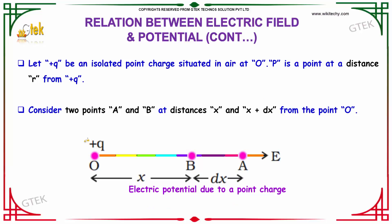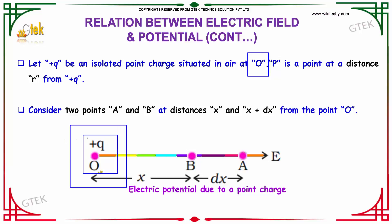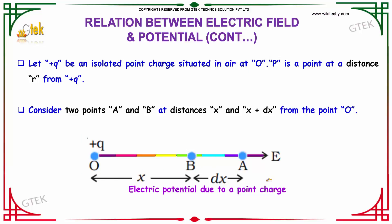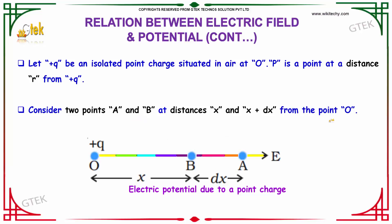Let's now consider the charge +q, which is an isolated point charge situated in air. P is a point at a distance r from +q. Consider two points A and B at distances x and x + dx from the point O.